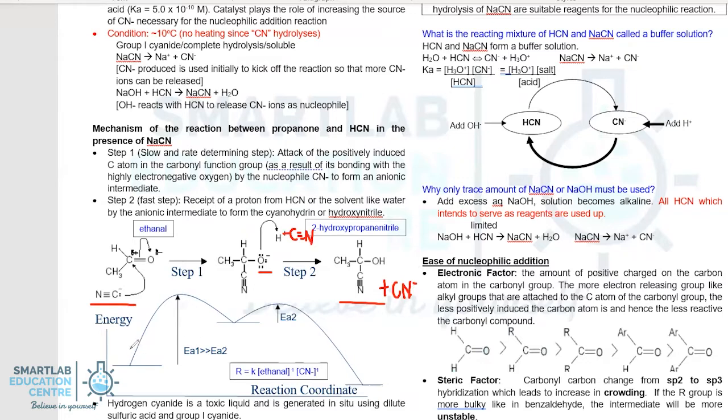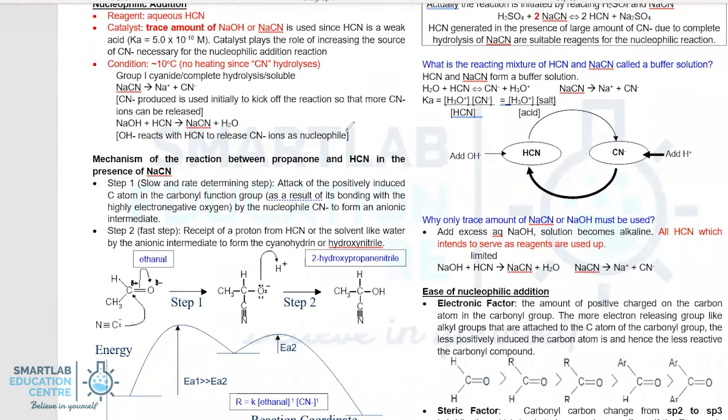In this reaction, in terms of reaction mechanism, you can see that initially, the EA1 is larger than EA2, so therefore, the first step is your slow step. The second step is thereafter the fast step. That's the reason why the EA, the activation energy, is lower. And in terms of the rate equation, it is a second-order rate equation, because in the slow step, it involves a CN-, and it also involves the aldehyde, or the ketone.